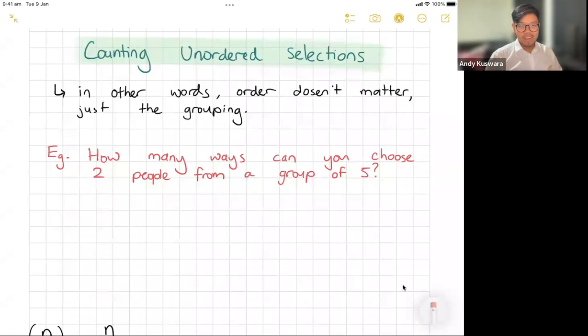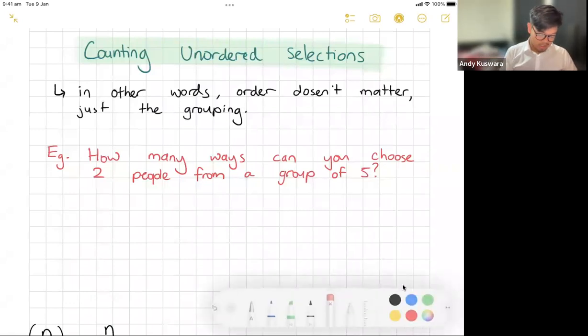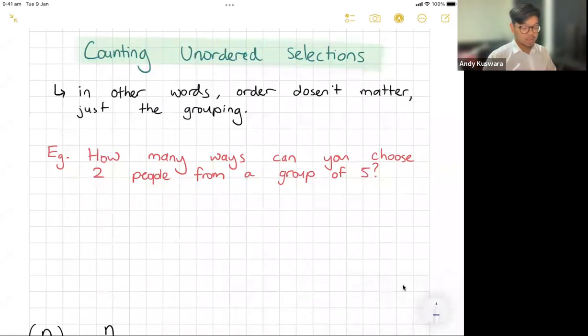Today we're talking about counting unordered selections. In other words, the order doesn't matter anymore, only the grouping. For example, if we're picking things like a committee, we don't care about who comes first, second, third. We're just picking a group of three from whatever. The first question I've got up here is: How many ways can you choose two people from a group of five?